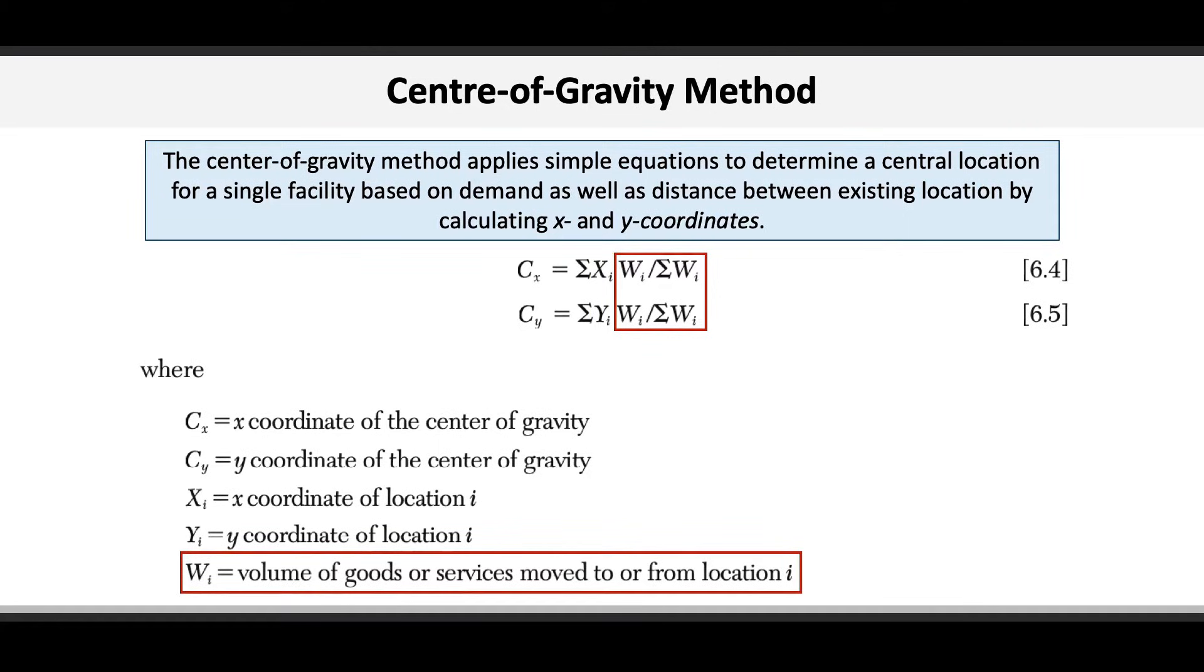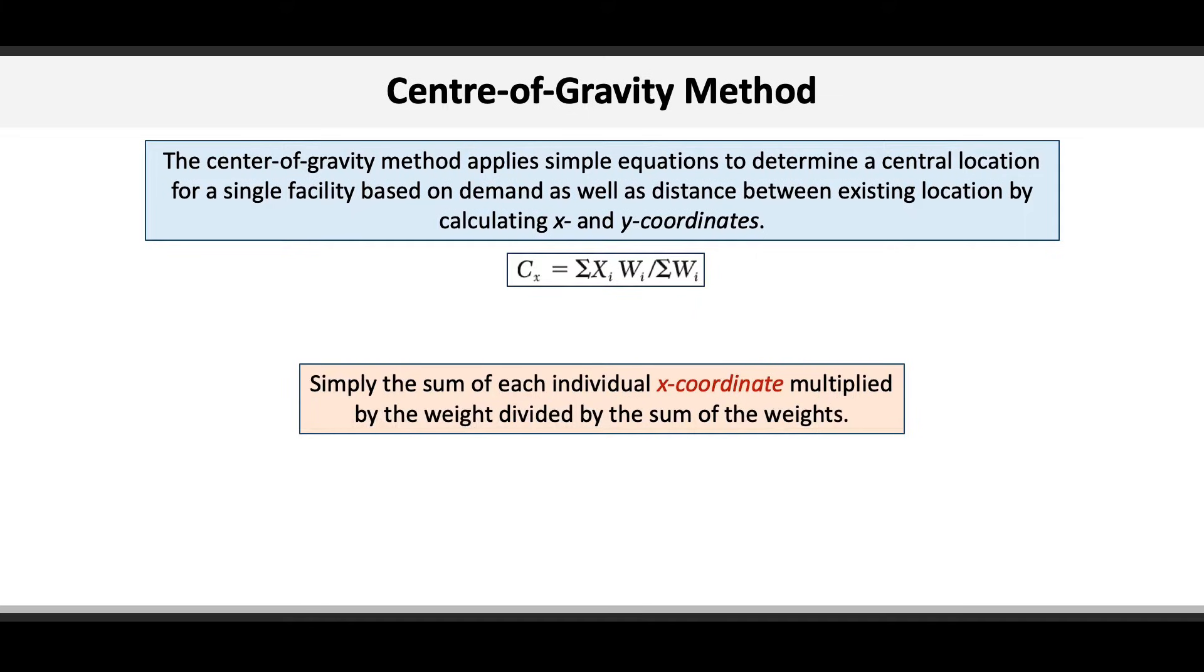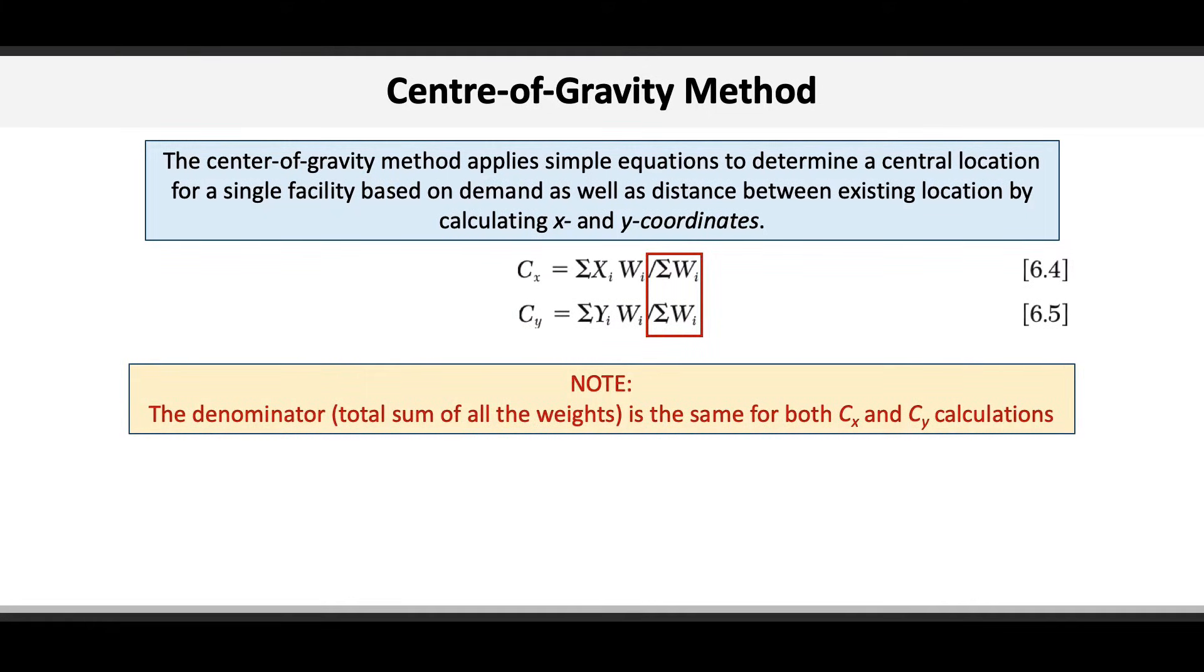So basically all you need to do to find Cx is sum each of the individual x coordinates, multiply by the individual weights, and then divide by the sum of the weights. You do exactly the same to find Cy, adding together all of the individual y coordinates multiplied by the individual weights, and then dividing that sum by the sum of all the weights. Note that the denominator in each equation, the sum of the total weights, is exactly the same in the calculations of both Cx and Cy.